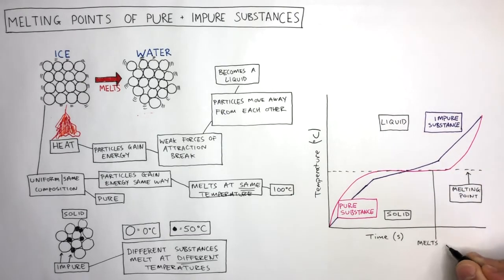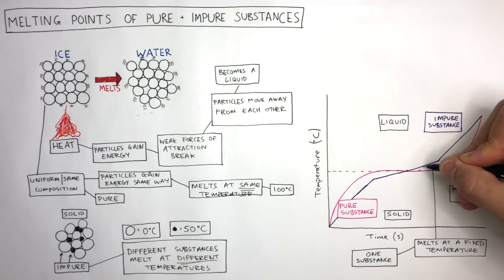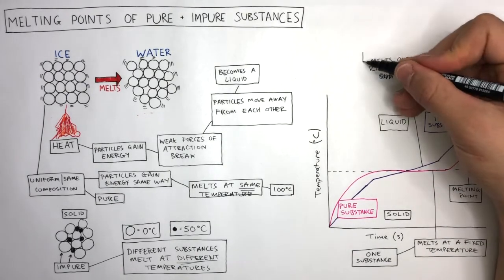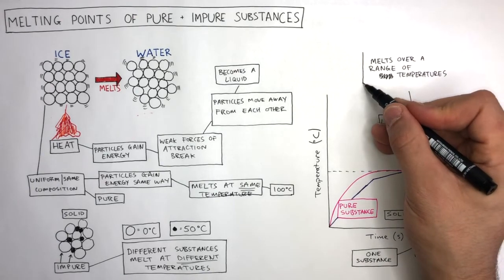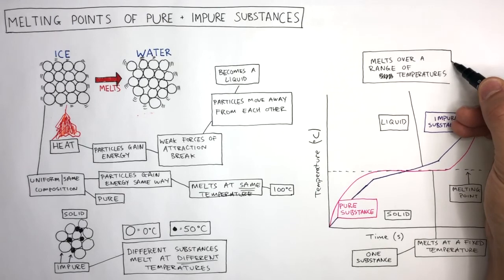Pure substance melts at a fixed temperature because there is one substance which has one melting point. Therefore, the line is horizontal and flat on the graph. Whereas an impure substance melts over a range of temperatures. The graph shows us this because the line is not horizontal on the melting point. It is sloping across the melting point.